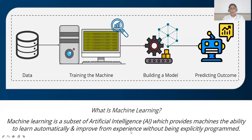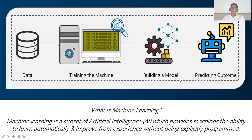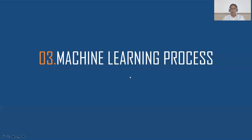To learn automatically and improve from experience without being explicitly programmed, here are four stages: we collect datasets, we have a library for training, we define what our output is, what the problem is, and what the solution is. We apply the algorithm to find the solution, then convert the result into two parts — testing and further training. This is the machine learning process.